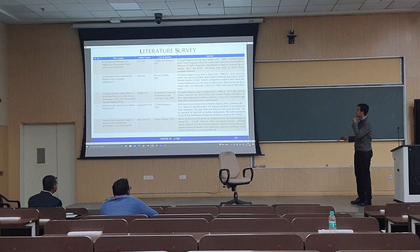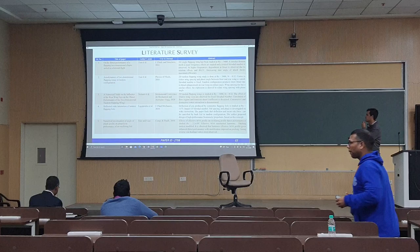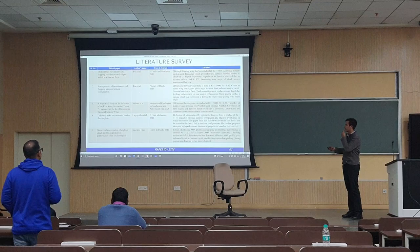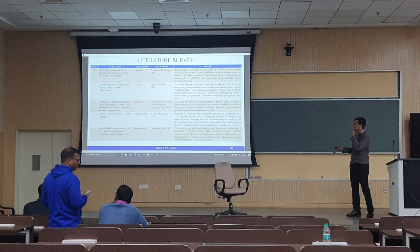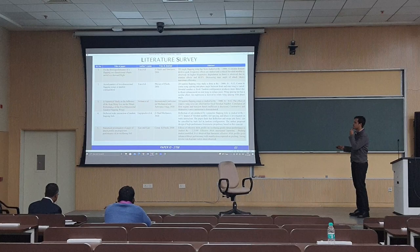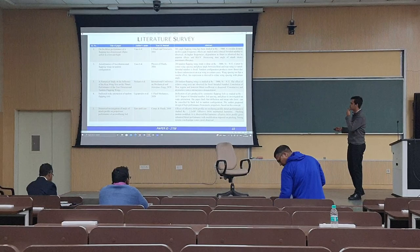Regarding the literature survey, we have referred to studies on the thrust performance of a single flapping wing, which is a generalization of which tandem flapping wings is an extension. The author has studied flapping frequency effects on thrust performance of a single flapping wing in forward flight. This has been extended to tandem flapping wings, studying how wing spacing and phase angle between rear and front wings varies thrust performance. Subsequent studies examine parameters such as rear wing size relative to front wing size and the effective angle of attack profile.